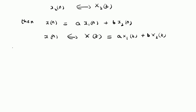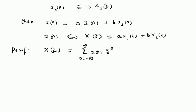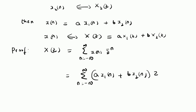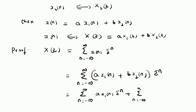Now the proof is actually straightforward. Let us look at that. So we want to find the Z-transform of the signal x of n. By definition, it is summation n equals minus infinity to plus infinity of x of n times z power minus n. But we defined x of n as a linear combination of the two signals. Therefore, we have summation n equals minus infinity to plus infinity of a times x1 of n plus b times x2 of n, multiplied by z power minus n. This sum can be written as a combination of two sums.